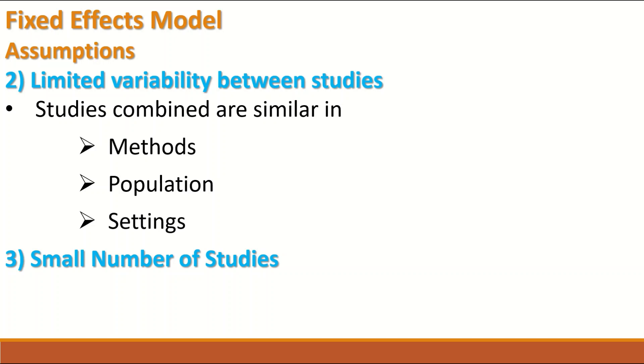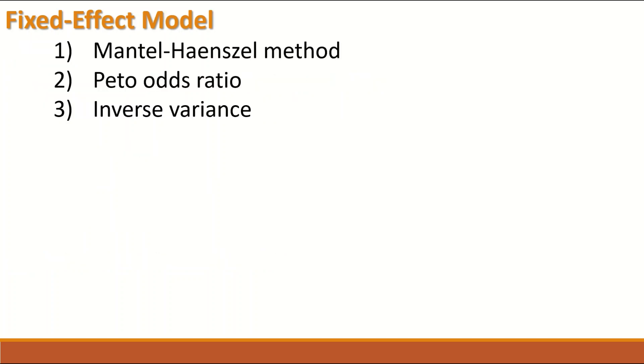There are three different options or methods when performing a meta-analysis and selecting the fixed effects model. The first one is Mantel-Haenszel method. The second one is Peto odds ratio when the outcome is binary and measured in odds ratio. The third one is the inverse variance.